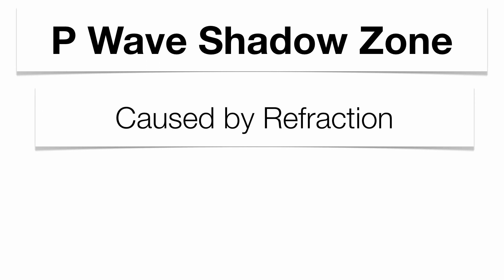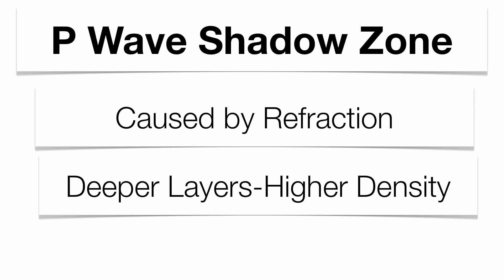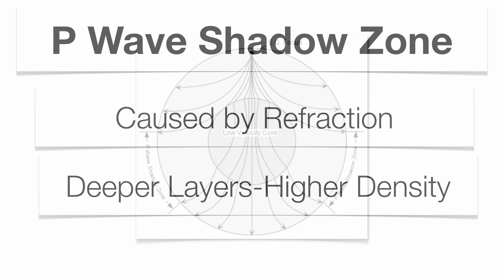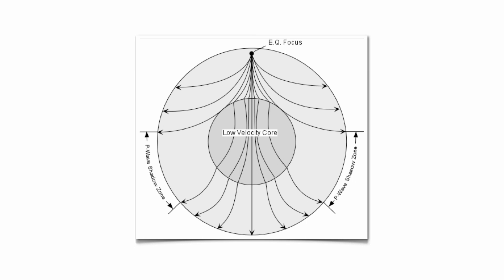That leads us into what we call shadow zones. Shadow zones are areas where you do not receive P waves, S waves, or both. We know that P waves can travel through solids, liquids, and gases — so why do we get a P wave shadow zone? It's caused by refraction. Because the different layers in the Earth have different densities, our P waves are going to change direction as they go from one layer to the next. The deeper the layer, the higher the density, the more the P wave is going to refract. You can see in this diagram a zone on the bottom right and bottom left of the Earth that do not receive P waves — not because P waves can't go through different layers, but because they refract entering and exiting the outer core. So you get two little zones called the P wave shadow zone.